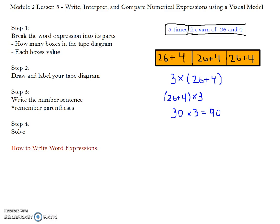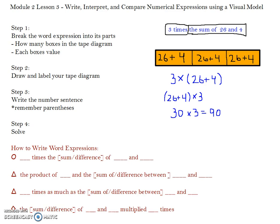Now we're going to take a look at how to write the word expression — taking a numerical expression and changing it into a word expression. We're going to talk about four different ways. The first: blank times the sum or difference of blank and blank. Second: the product of blank and the sum or difference between blank and blank. Third: blank times as much as the sum or difference between blank and blank. And finally: the sum or difference of blank and blank, multiplied blank times.